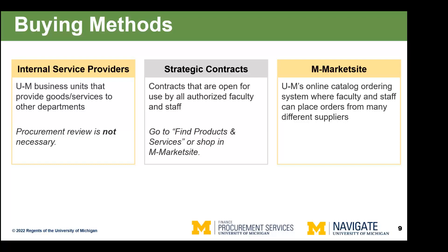Next are strategic contracts or university contracts. These are suppliers for which procurement has established a university-wide agreement that can be used by anyone — all authorized faculty and staff. Many of these, although not all, are found in our M MarketSite. M MarketSite is our Jaggaer platform where we host catalogs for a number of our suppliers, and you can punch out an order directly from their catalog at prices we've negotiated, often with additional items like free shipping and better customer service support.